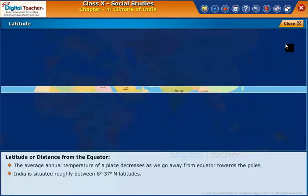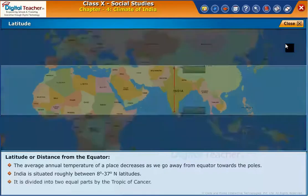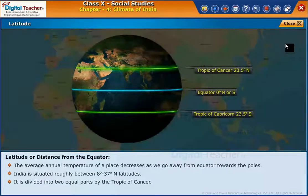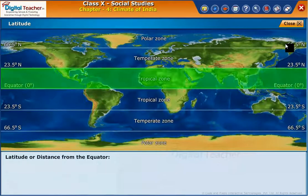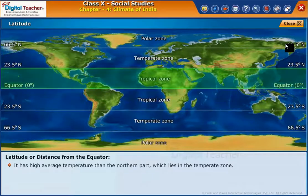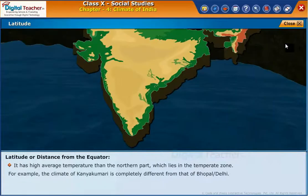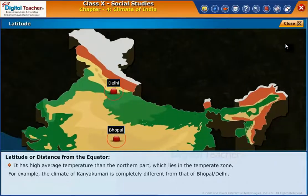India is situated roughly between 8 degrees to 37 degrees north latitudes. It is divided into two equal parts by the Tropic of Cancer. The southern part of India lies in the tropical belt, closer to the equator, and has a higher average temperature than the northern part, which lies in the temperate zone. For example, the climate of Kanyakumari is completely different from that of Bhopal or Delhi.